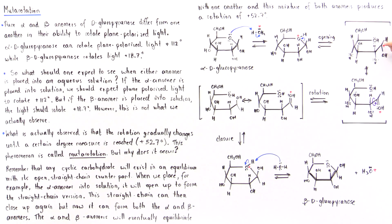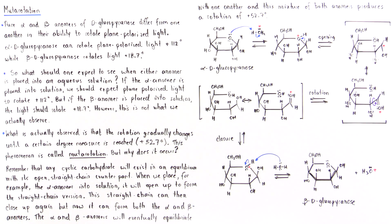We have a positive charge on the carbon, but if the two electrons from this oxygen form a pi bond here, the charge can be delocalized onto this oxygen. So we have a resonance-stabilized intermediate.